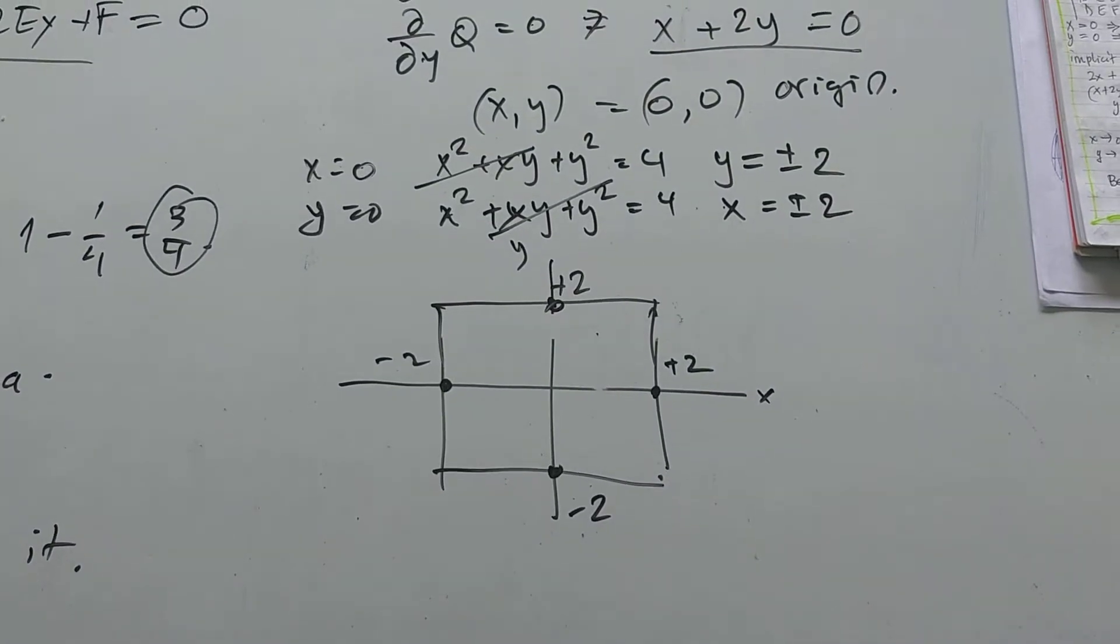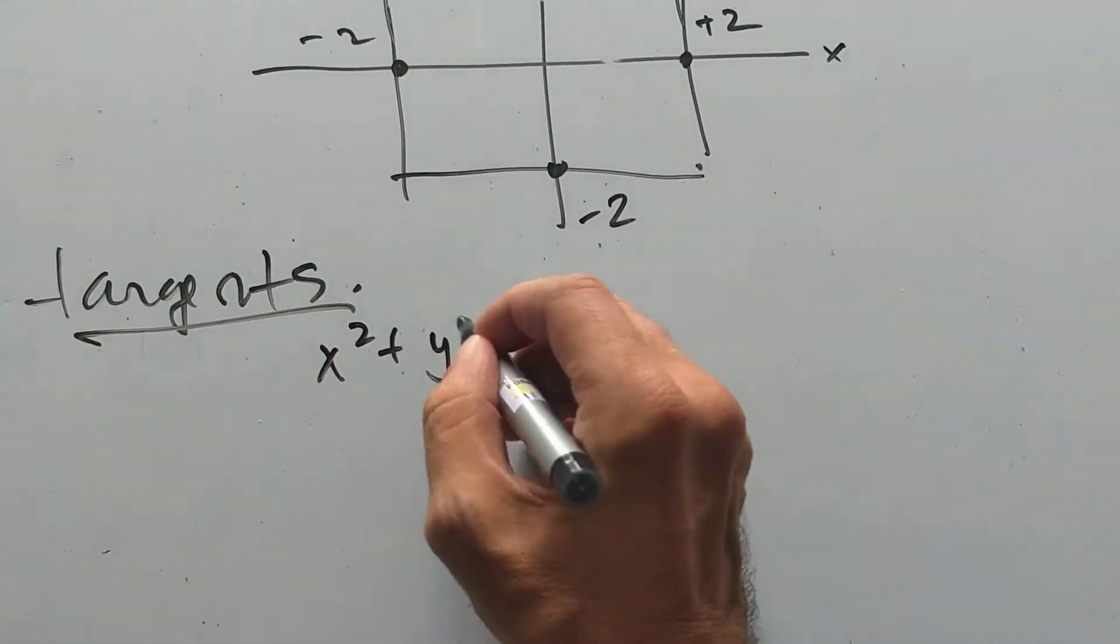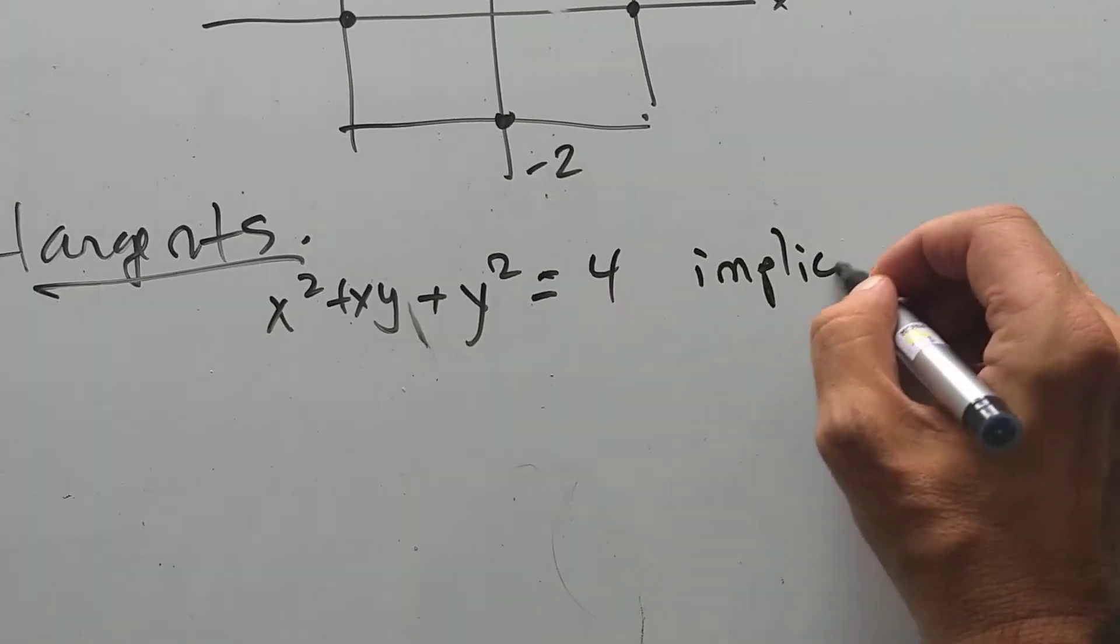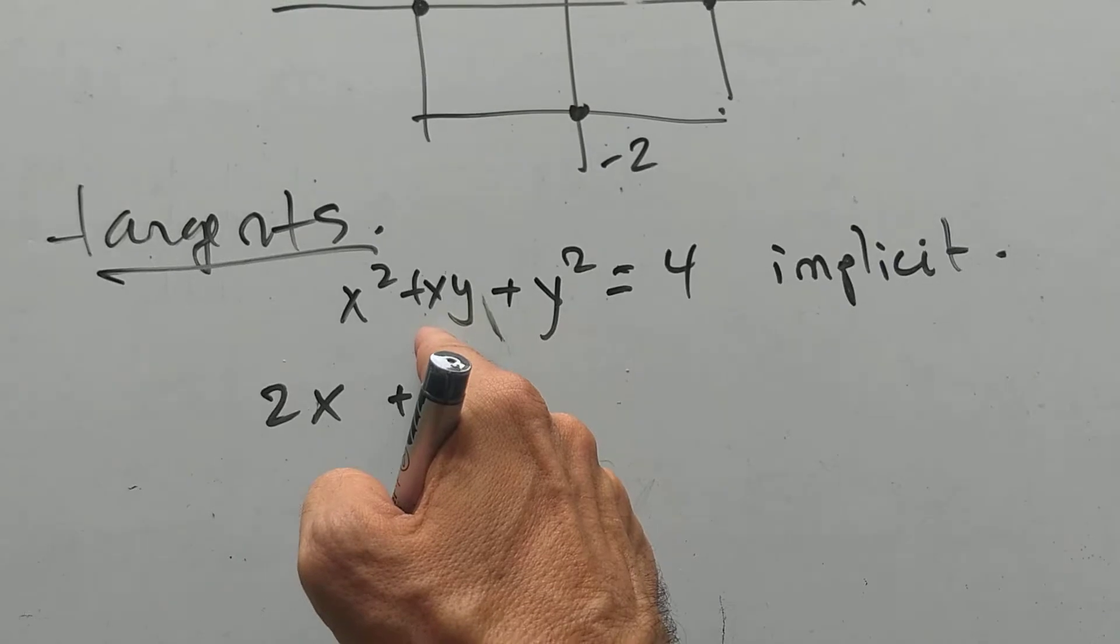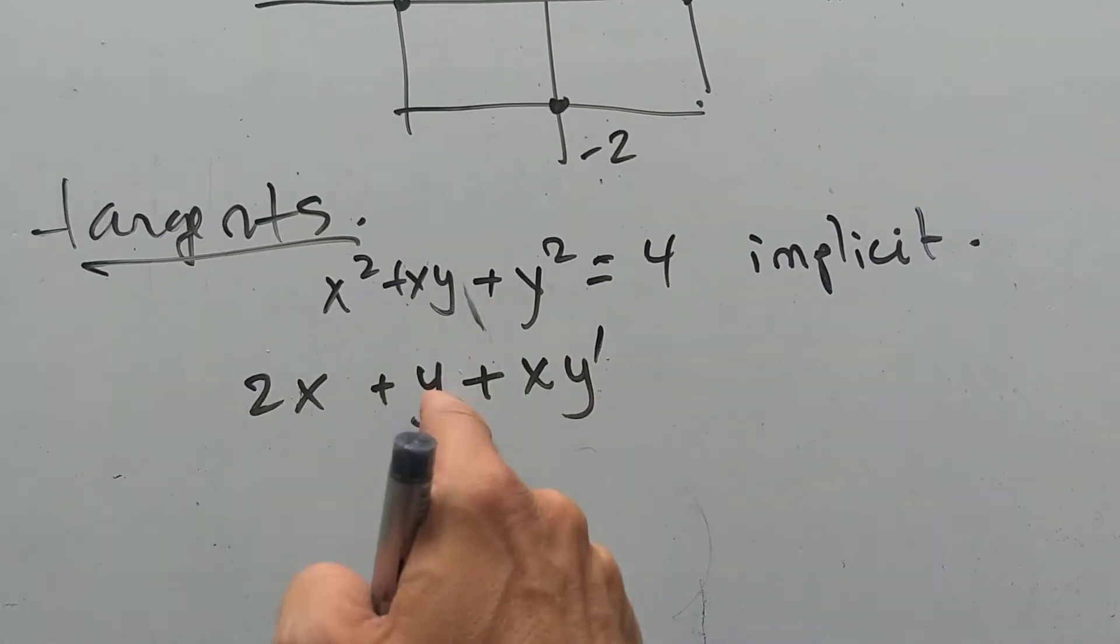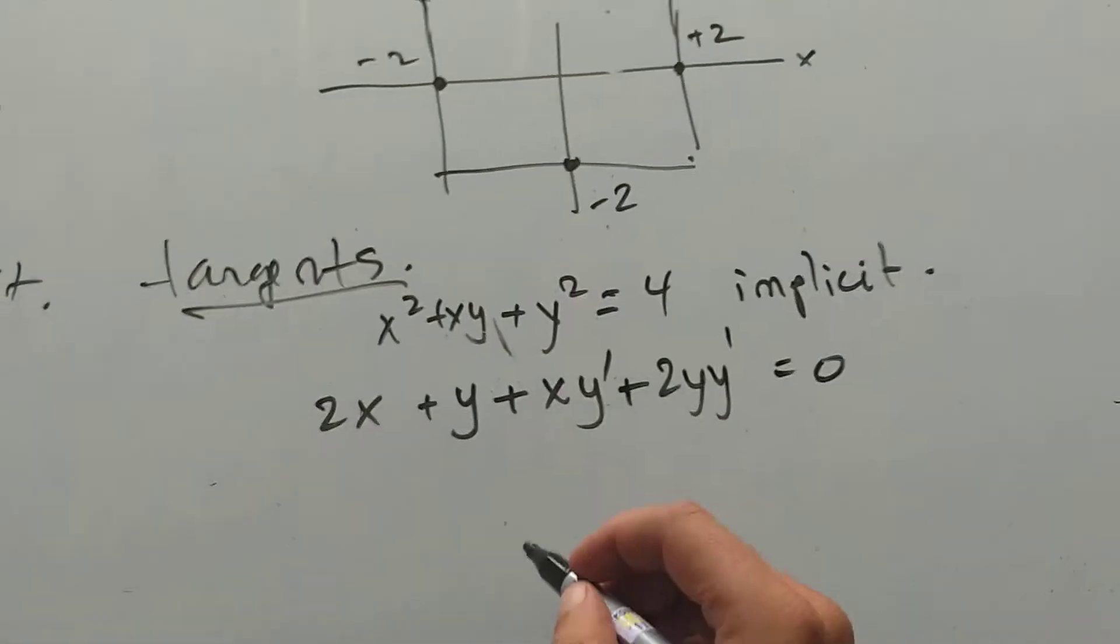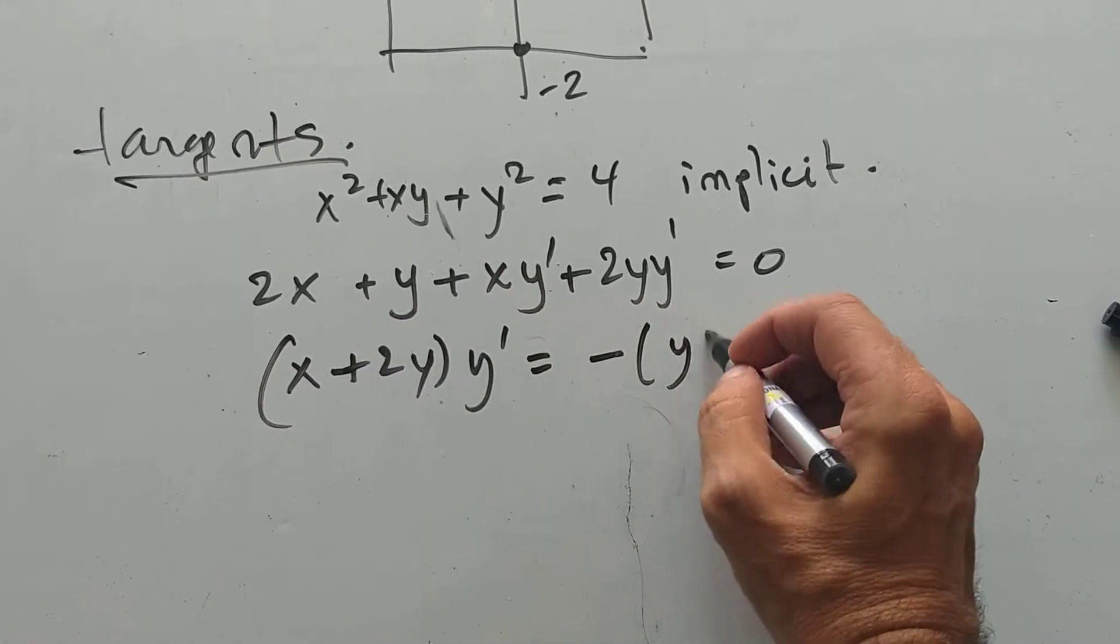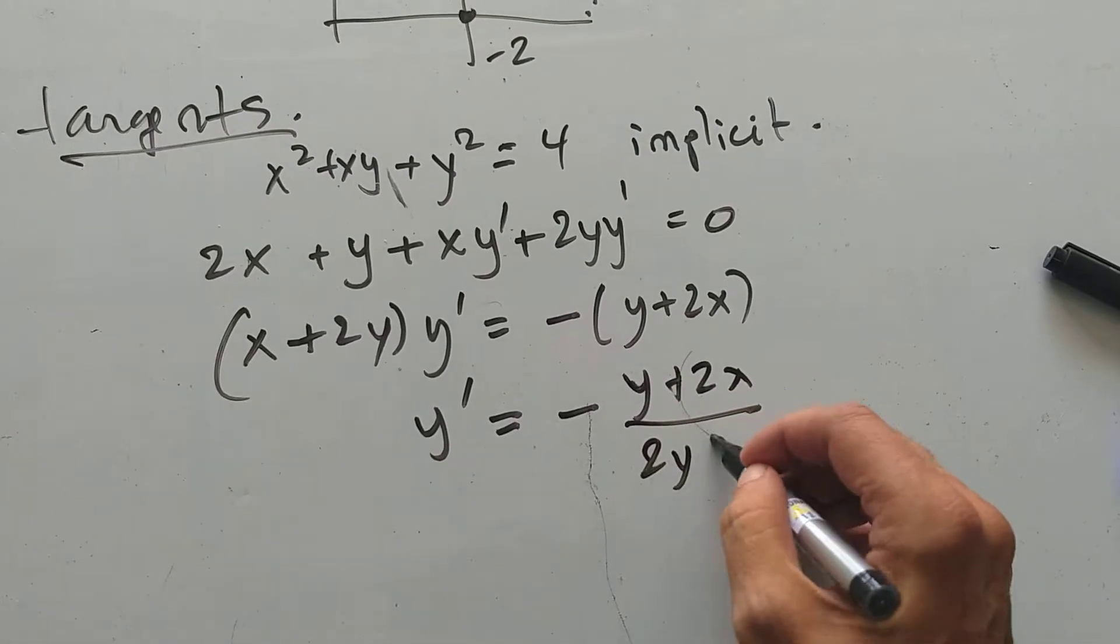Now, let's use more calculus. Let's find the slope of tangent lines, tangents. Okay, let's take our curve, X squared plus XY plus Y squared is 4. And do implicit differentiation. And I have 2X plus Y and this XY, XY prime when I differentiate with respect to X. And then this term, 2Y Y prime is 0. All right, let's solve for Y prime. I get X plus 2Y Y prime is minus Y plus 2X. Y prime is minus (Y plus 2X) over (2Y plus X). There.